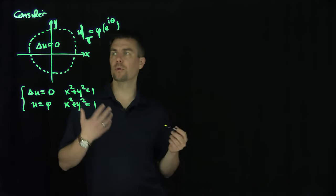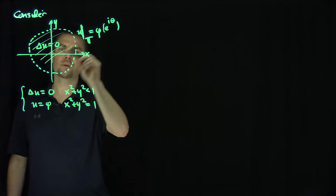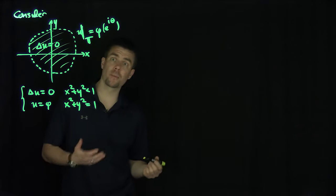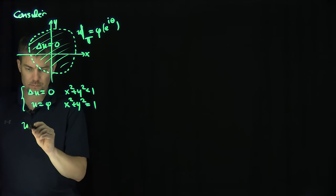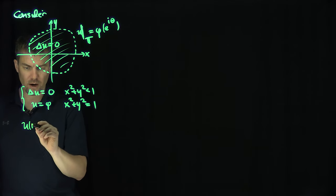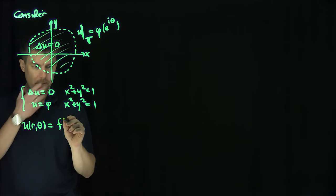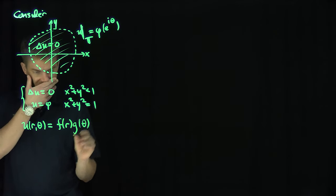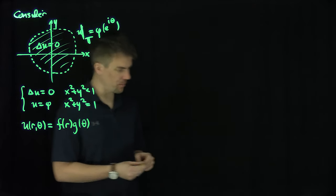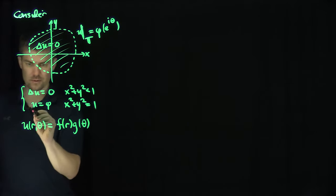Our typical approach to this problem is separation of variables. We're going to write u(r, θ) in polar coordinates as a product f(r) times g(θ). This is the method of separation of variables.